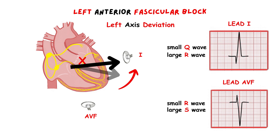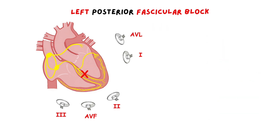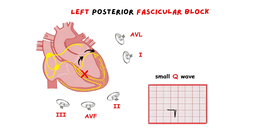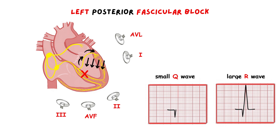Now let's see what happens when we have a left posterior fascicle block. When there is a left posterior fascicle block, we have the opposite situation. Now the depolarization wave to the left ventricle spreads only via the anterior fascicle. So at the beginning, the impulse travels upward and to the left, then the impulse must be spread to the rest of the muscle mass, which is now pointed downward and slightly to the right. So the initial upward conduction will be recorded as a small negative wave — a small Q wave in the inferior leads — because the impulse is directed in the opposite direction from them. And then the following downward conduction is going to be recorded as a large positive wave, a large R wave. So we have a small Q wave followed by a large R wave.